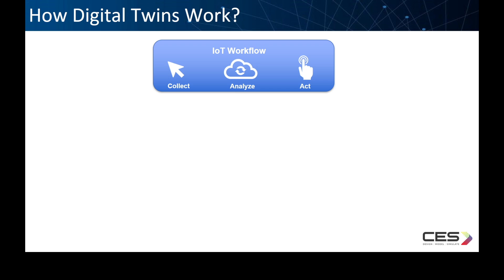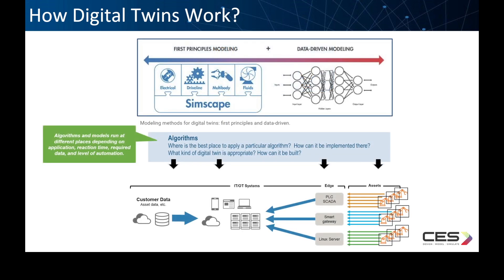Modeling methods generally can be grouped into two types. First, physical-based methods such as mechanical systems and electrical modeling, and data-driven methods such as deep learning, machine learning, and reinforcement learning.